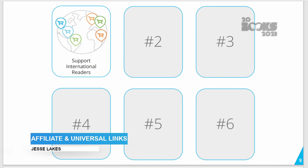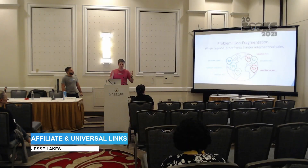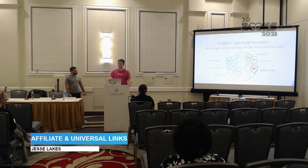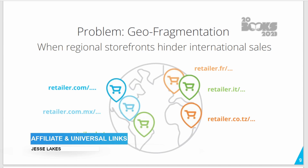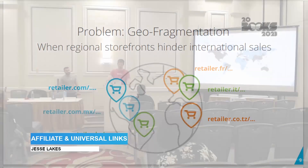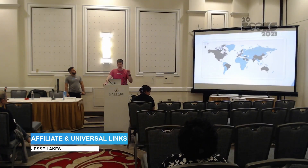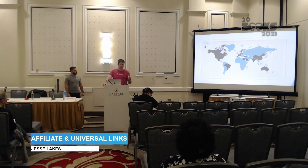This problem starts with what we call geofragmentation — the idea that major retailers, as they grow and expand, create different country and region-specific storefronts optimized for that specific audience. Amazon is a perfect example: Amazon now exists in 22 different countries, with 22 different storefronts specifically geared for those different audiences. Amazon has spent millions, if not billions of dollars, optimizing each store for that specific region.